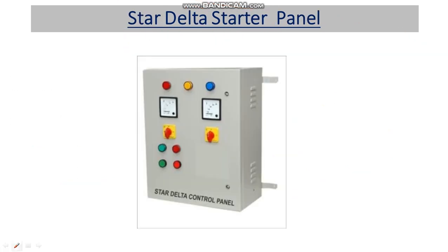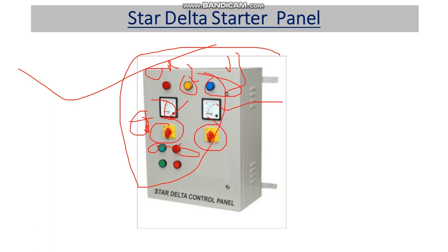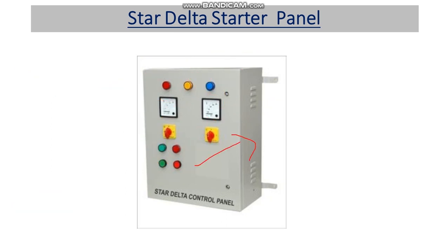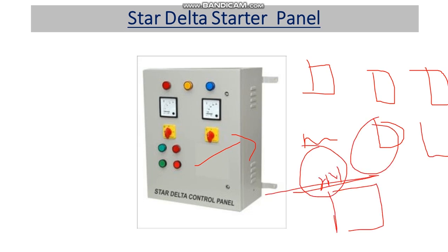Now let's look at the star delta starter panel. It has push buttons for start and stop, three-phase monitoring indicators for R, Y, B phases, an ammeter to measure current of each phase, a voltmeter to measure voltage, and an on/off indicator to monitor whether the motor is running or stopped. Internally the panel has three contactors — one main, one star, and one delta — plus an MCB, an OLR, and an on-delay timer.